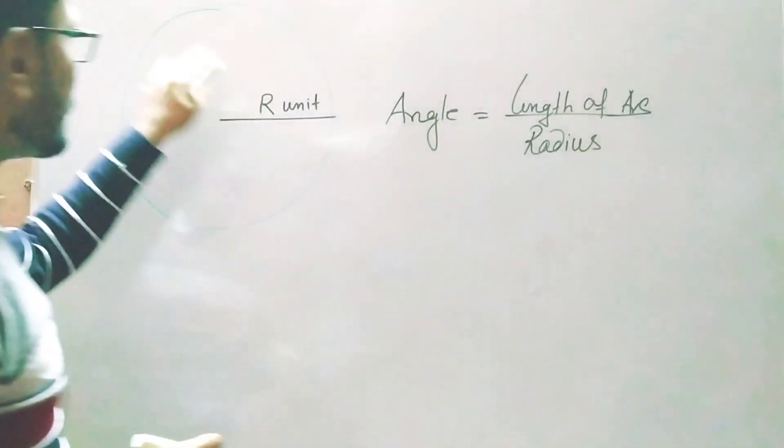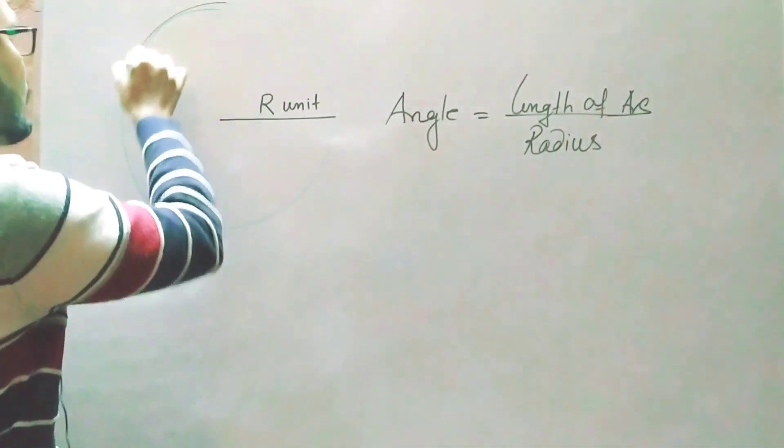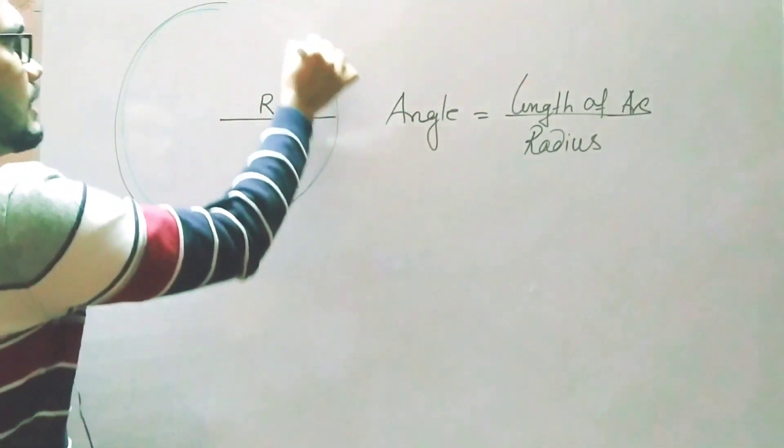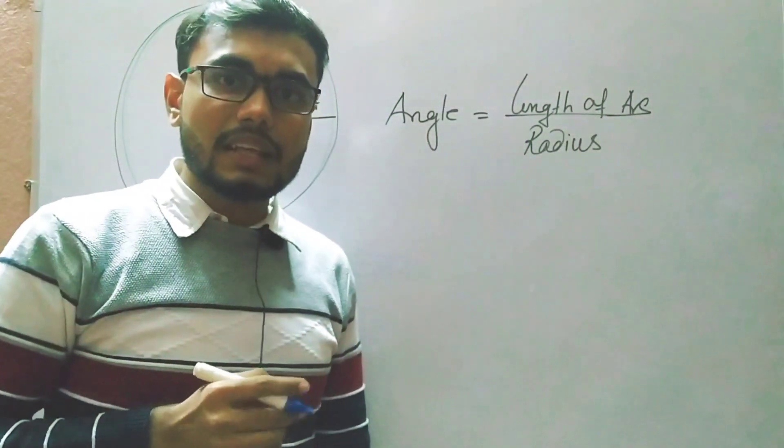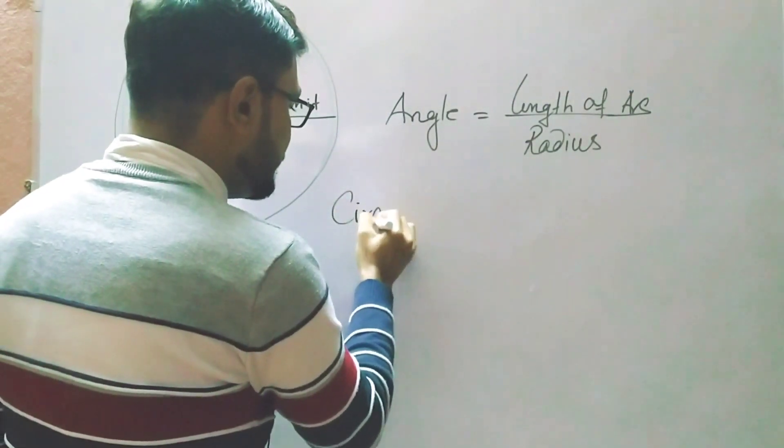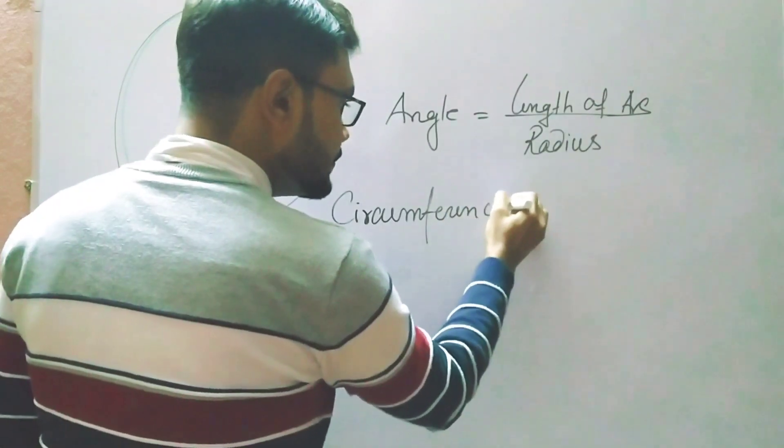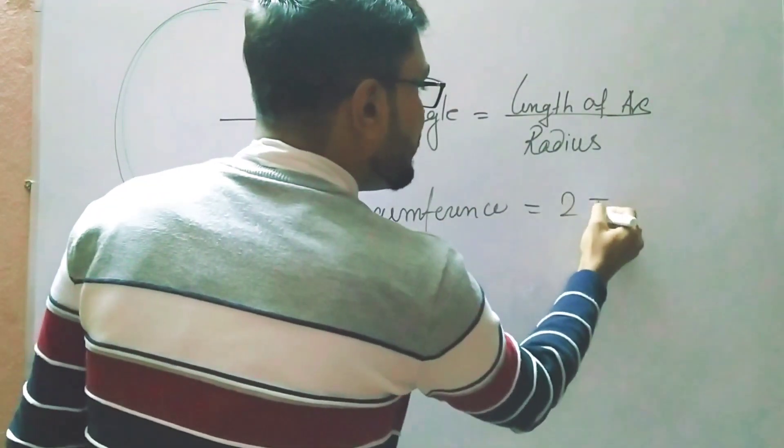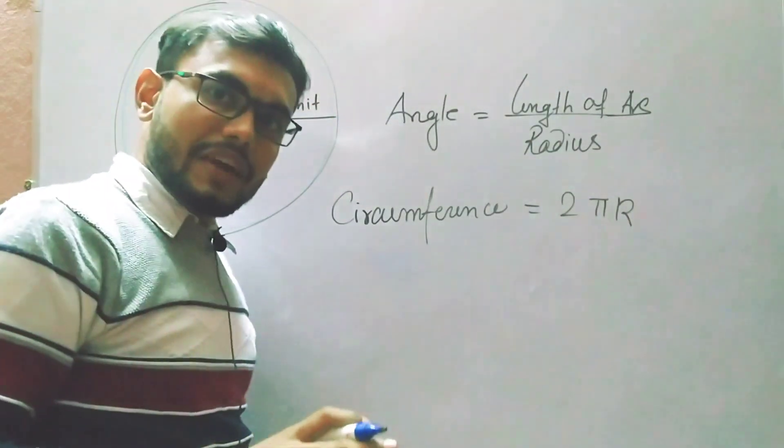Now we are finding the total angle of a circle. That means we have to take the total length of the arc of this circle, and the total length of the arc means the circumference of the circle. We know the circumference of the circle is 2πr, where r is the radius.